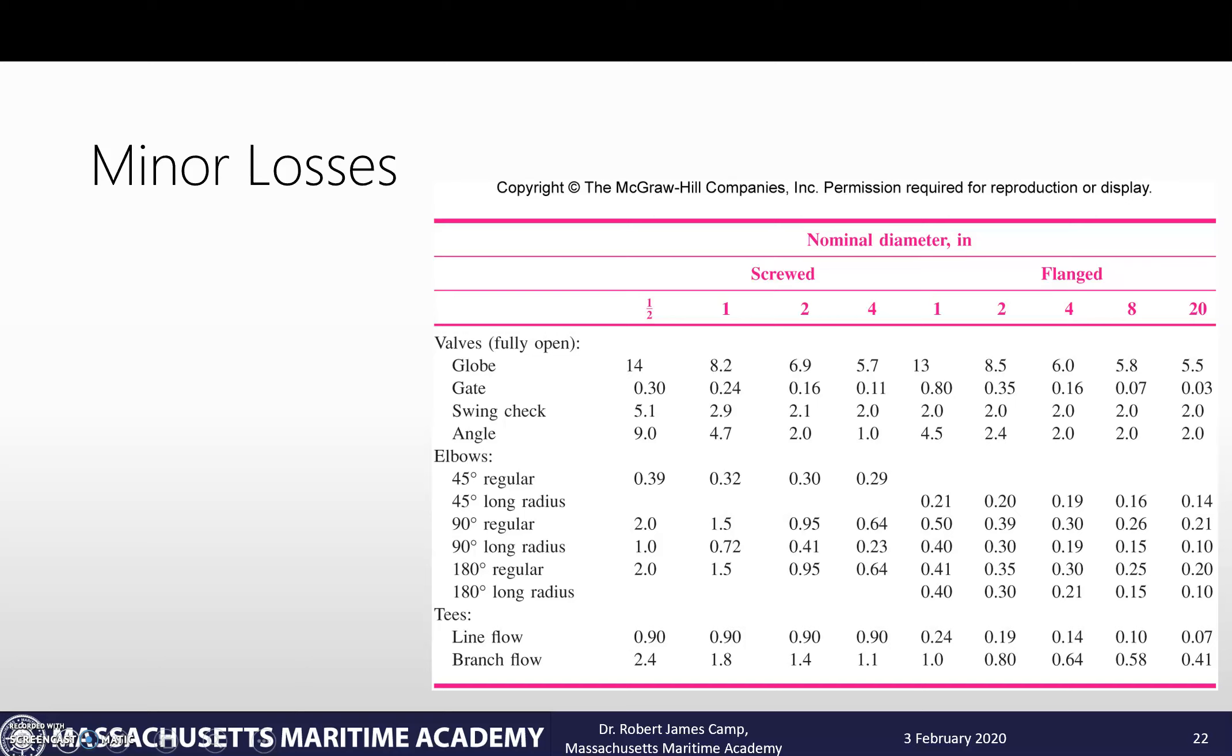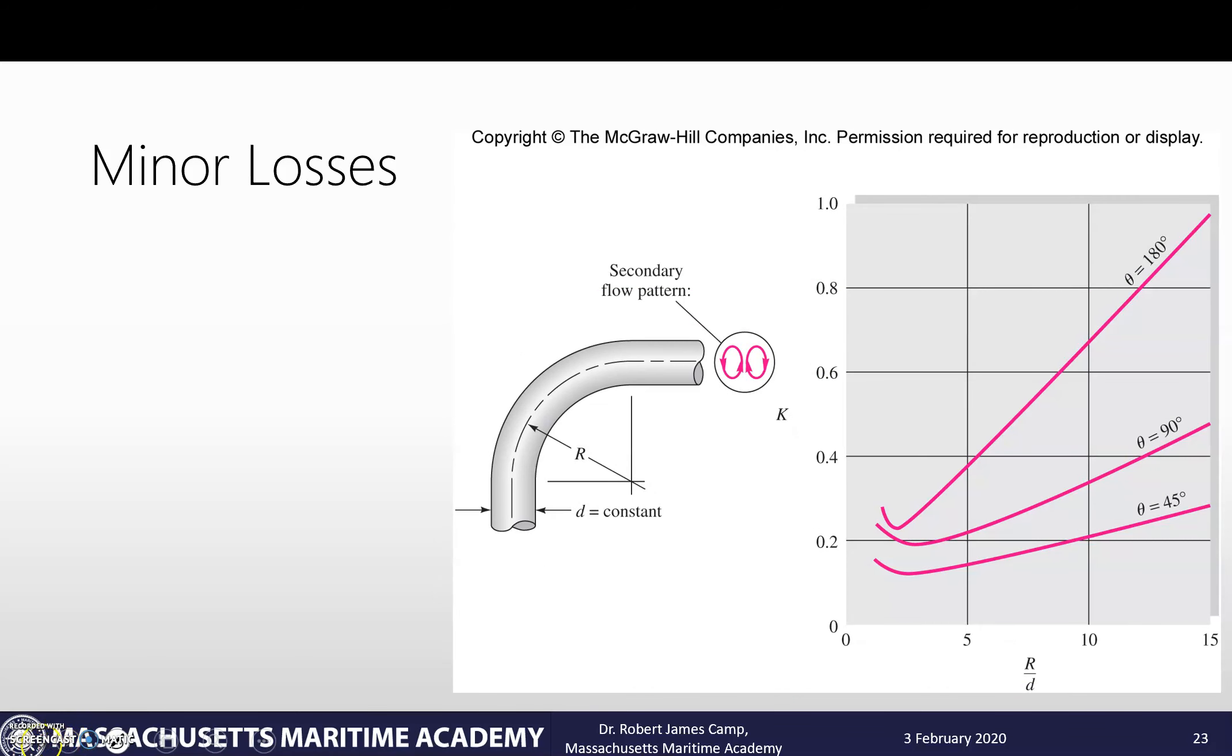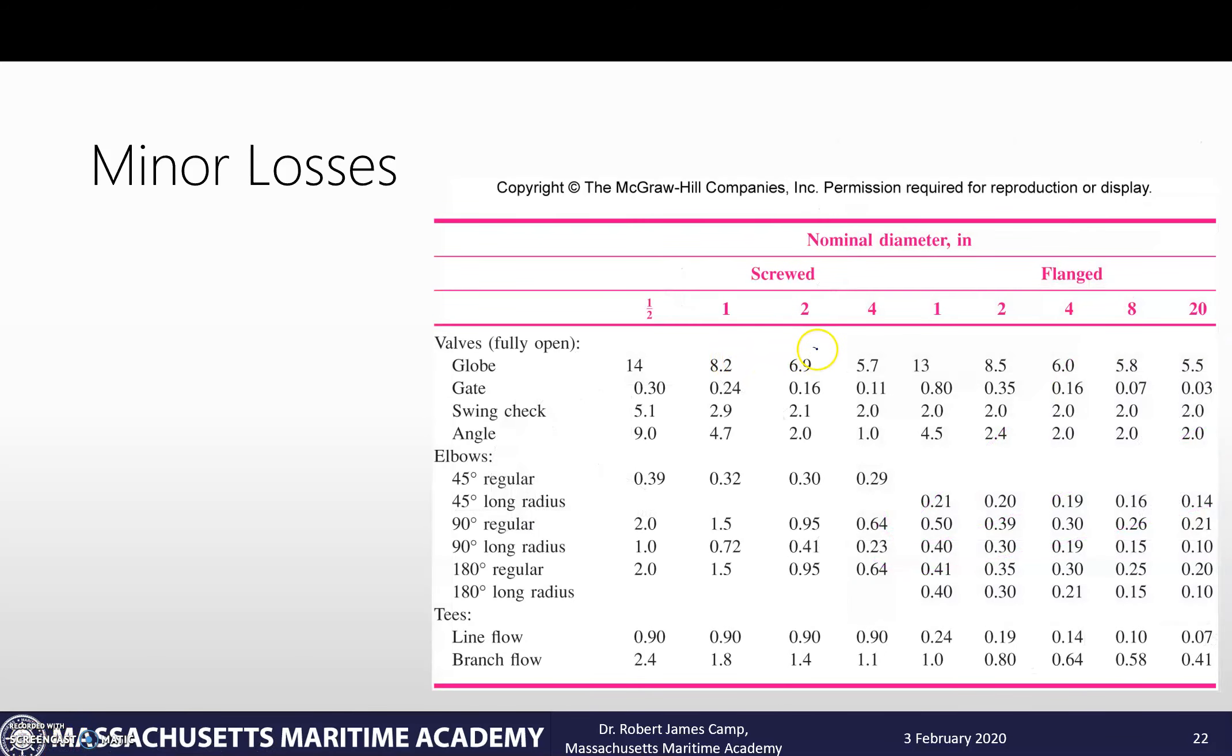Now we have our open globe valve. We'll assume it's screwed - why am I assuming it's screwed? Because I have screwed pipe later on. So we look: two inches screwed, fully open globe valve, right there we have a value of 6.9.